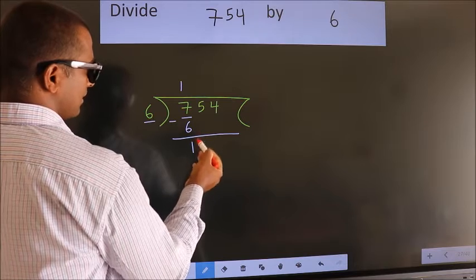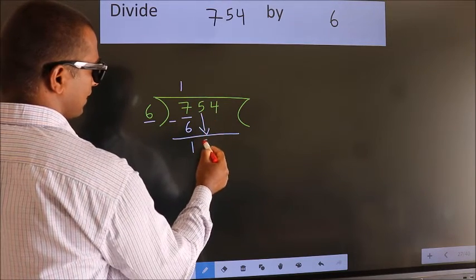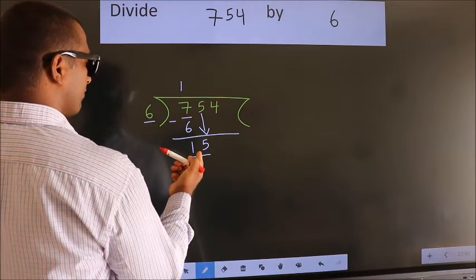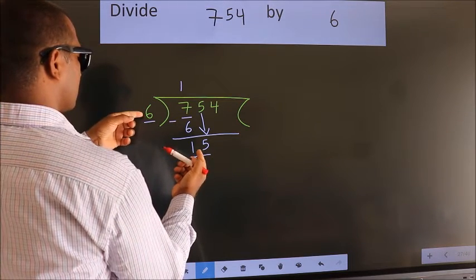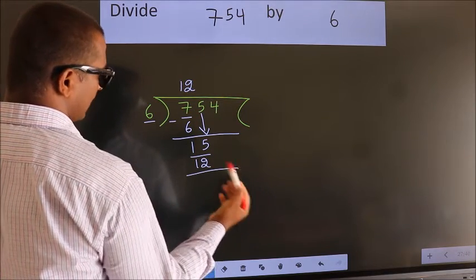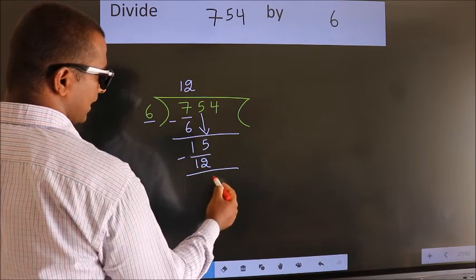After this, bring down the beside number. So 5 down. So 15. A number close to 15 in 6 table is 6 2s 12. Now we subtract. We get 3.